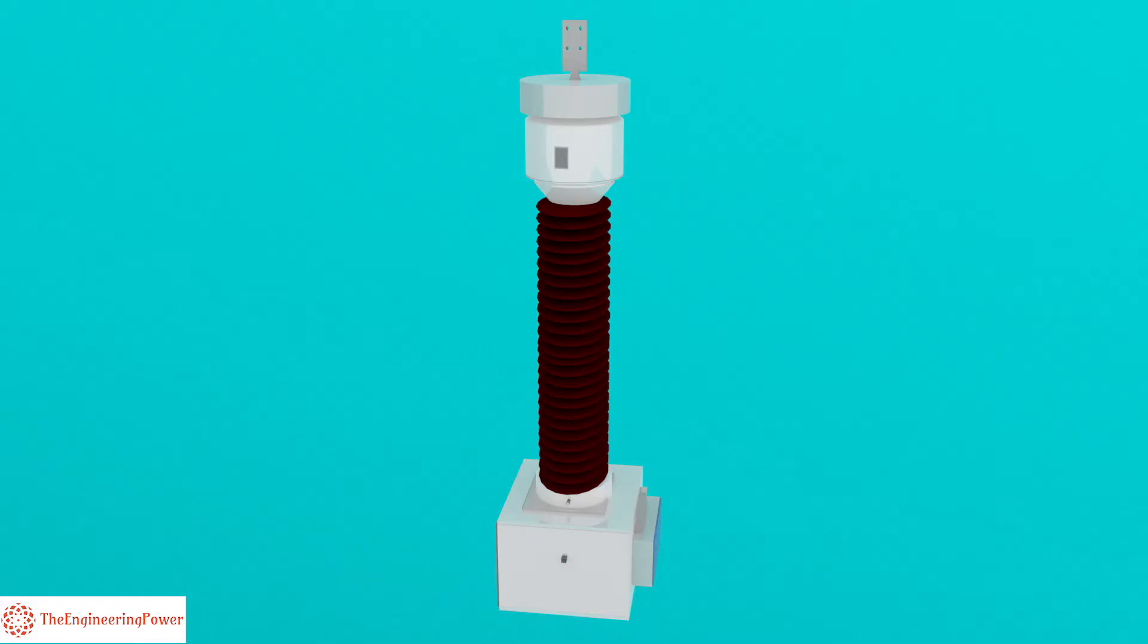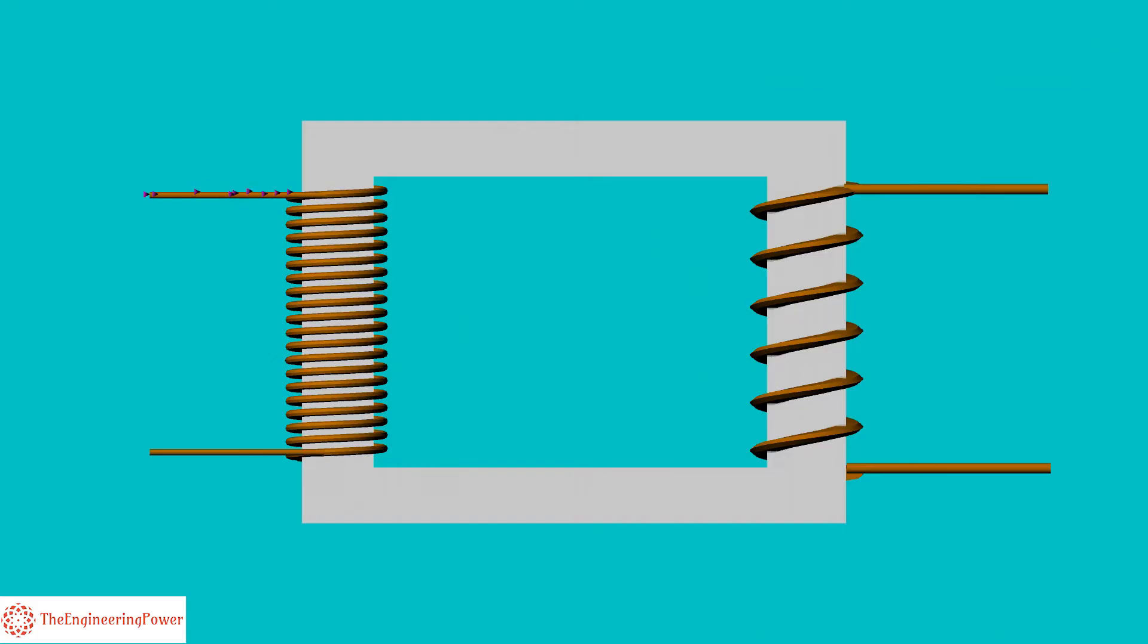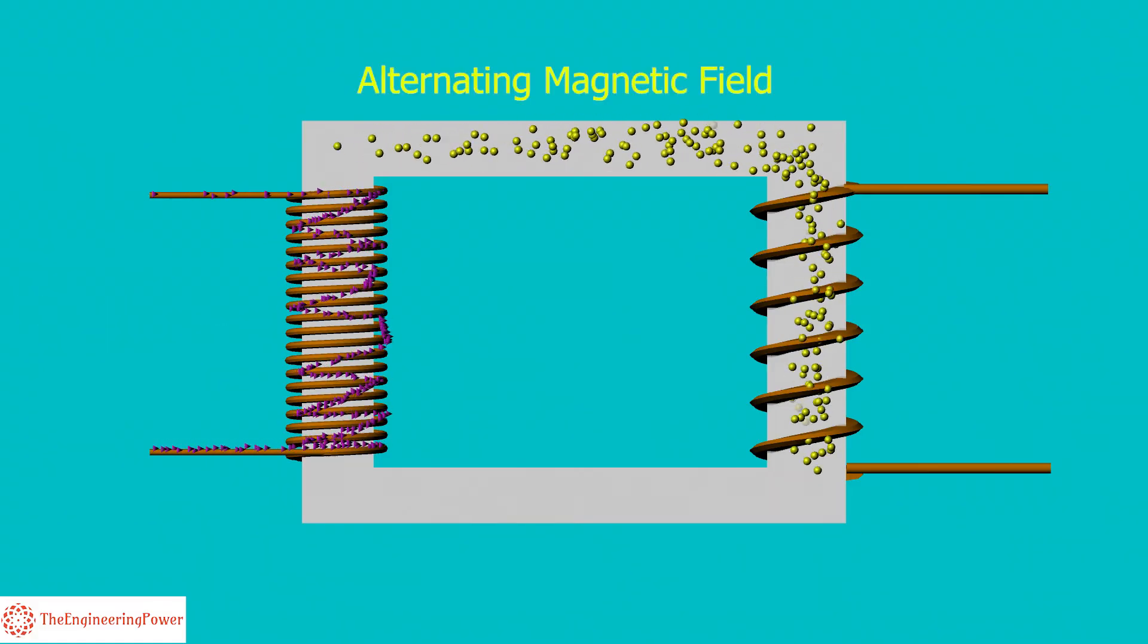The working principle of PT is based on Faraday's law of electromagnetic induction. When alternating current passes through a conductor, a magnetic field is generated. When a high AC voltage is applied to the primary windings of PT, an alternating magnetic field is produced in the core.